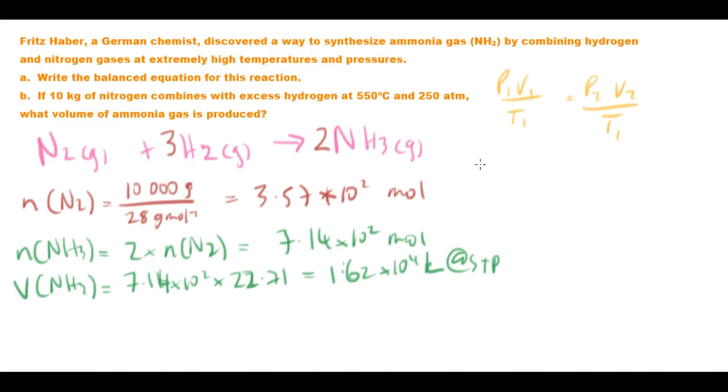So let's plug in our values. At atmospheric pressure you have 1 atmosphere, and you have a massive volume, 1.62 by 10 to the 4 litres, and that is at 273 Kelvin. And we want to find out what it is at 250 atmospheres times our second volume, which we don't know yet, and at a whopping 823 Kelvin.